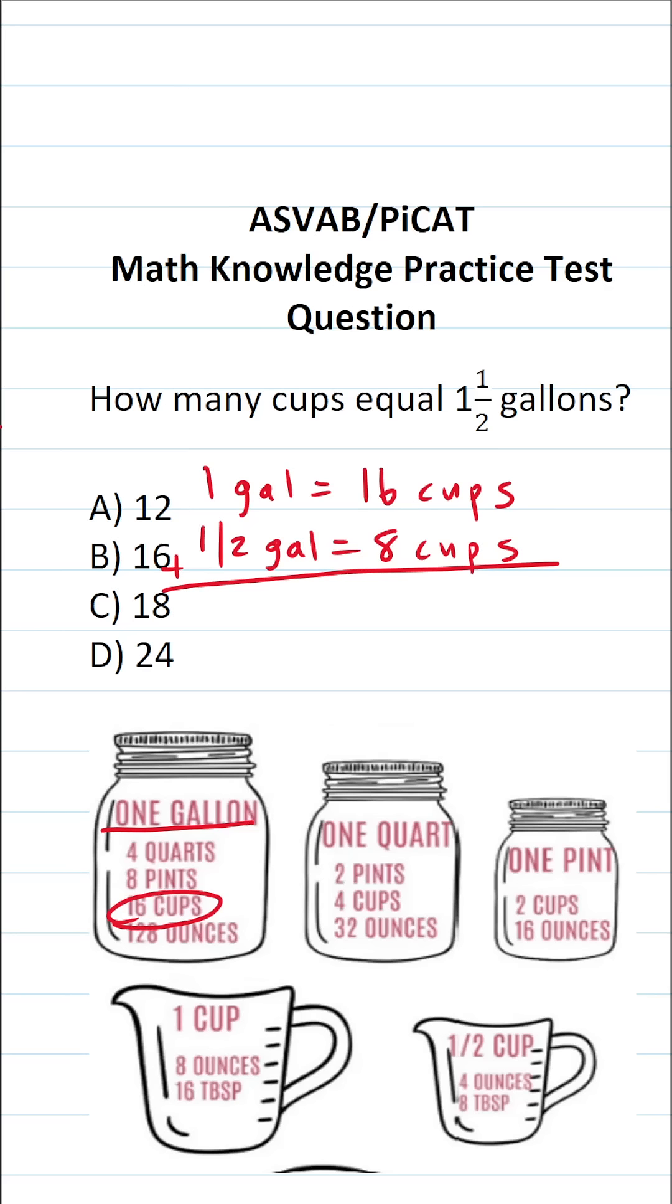So let's add this up. One gallon plus a half a gallon is one and one half gallons. 16 plus eight is going to be 24 cups.